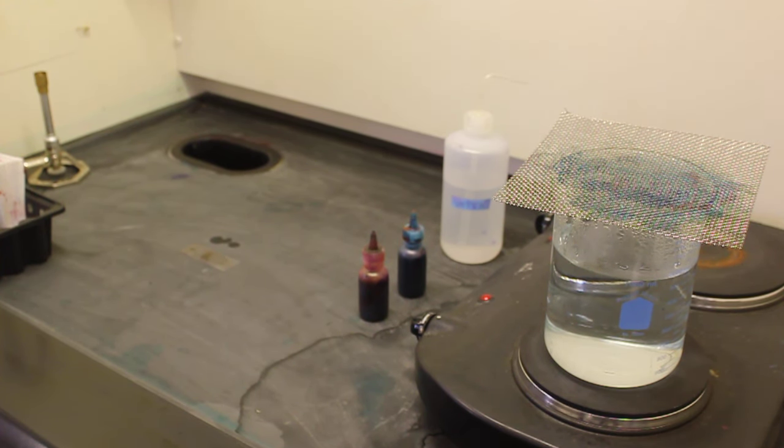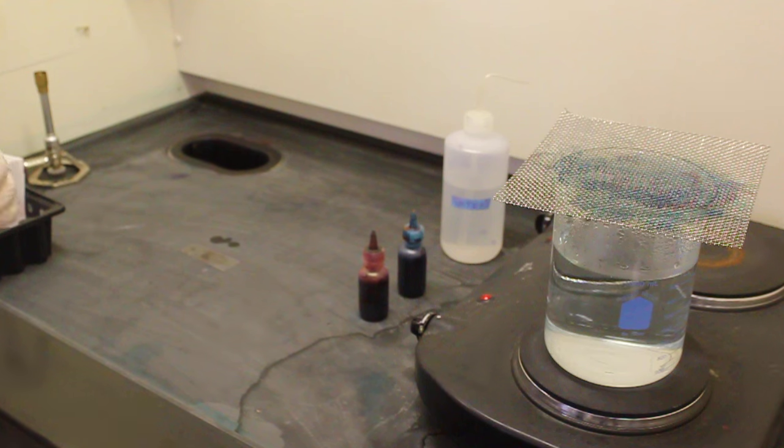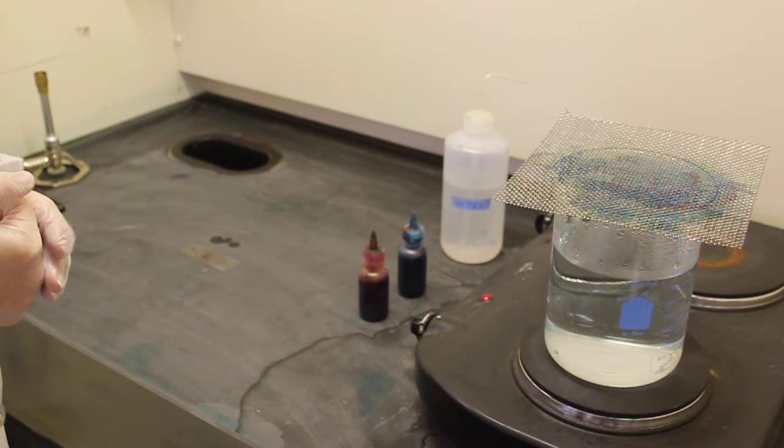I am now going to demonstrate the endospore stain. The endospore stain is a different type of differential stain. At the end of this stain, you will be able to differentiate through a microscope between a vegetative or living cell and an endospore.